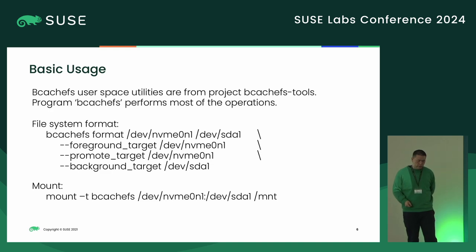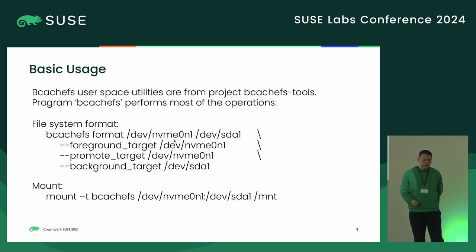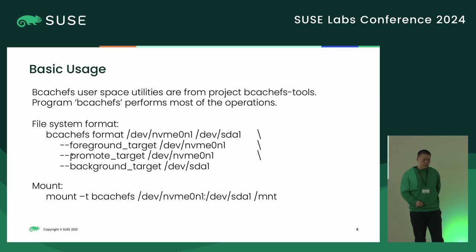To format a file system, we can use 'bcachefs format'. Here is the device list — in this example I use a medium SSD and a hard drive, two devices, and there are three options.